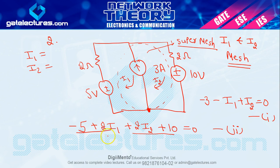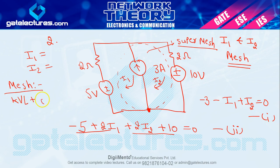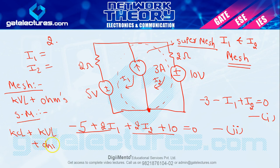आप घर में solve कर सकते हैं और i1, i2 के answers comment section में लिख सकते हैं। Mesh analysis में KVL plus Ohm's law use होता है। Super mesh में हमने KCL भी apply किया, KVL भी apply किया, और Ohm's law भी — तो super mesh में KCL plus KVL plus Ohm's law होता है। कई बार theoretical questions इन points पर आते हैं, तो clear होना चाहिए।